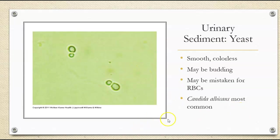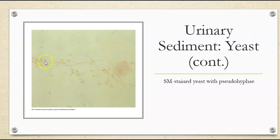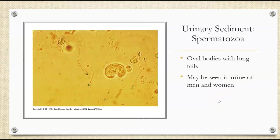Yeast — they look like little footprints. If you cover up the budding portion and just look at a single yeast, it can definitely be mistaken for a red blood cell. We can see just one yeast, or we can see budding yeast or pseudo-hypha. Candida albicans is the most common yeast that we see. Here's some budding yeast, and here is yeast with pseudo-hypha. The pseudo-hypha is more common in urine that's been sitting for a while and not a freshly voided urine. We can also see sperm present in the urine — they're oval bodies with long tails, and we can see them in the urine of men and women.